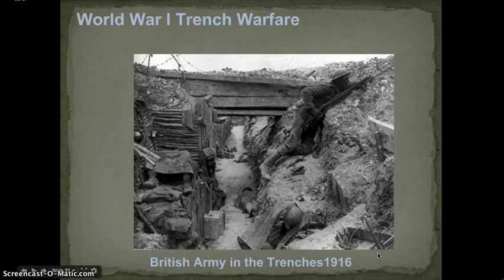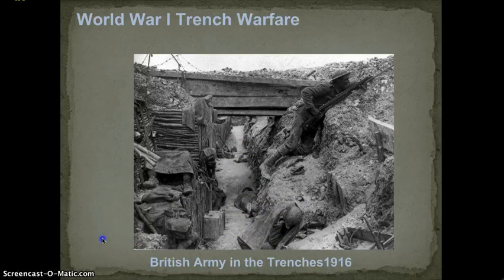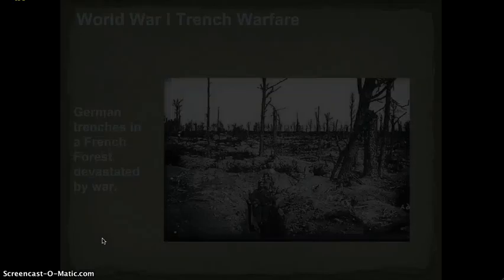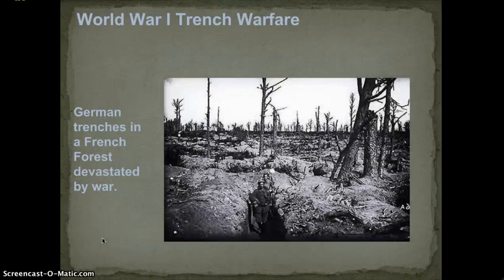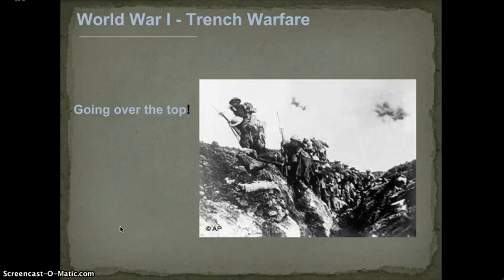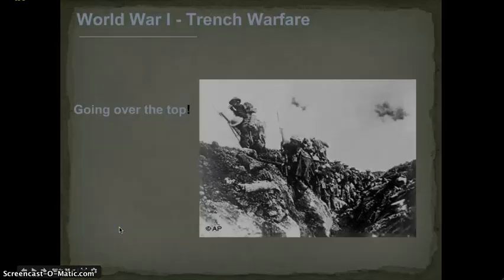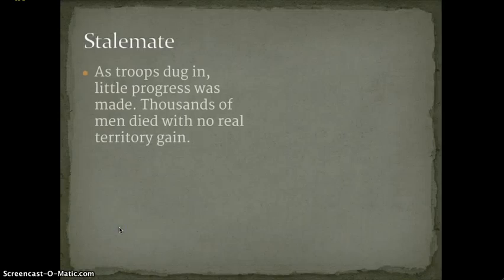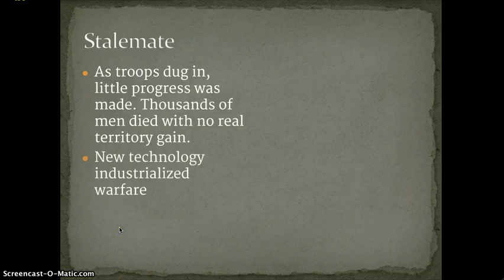Here you can see people sleeping, resting, taking their turn — taking a break in a British trench in 1916. These are German trenches in a French forest devastated by the war — this once was a thick forest, but the trees were pretty much all decimated. The whistle would be blown and you would scramble up and out of your trenches, charging into the enemy's trenches crossing through No Man's Land. Often, people got caught in the barbed wire and were just sitting ducks. They tried to keep the mud out by putting boards in the trenches and building retaining walls. New technology meant industrialized warfare — we mass-produced death during this war.